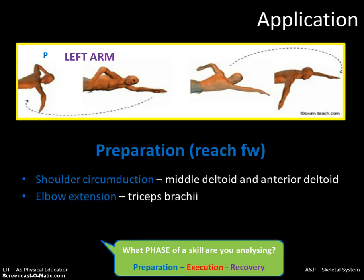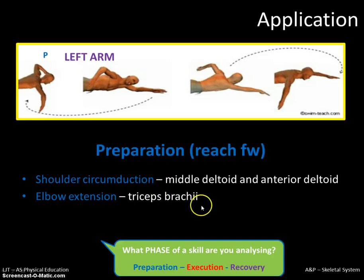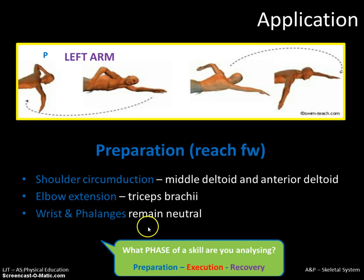Elbow extension is created by the triceps brachii contracting. It's really important that you get comfortable using the word brachii, because if you just say triceps you'll get zero marks in the exam. The wrist and phalanges remain fairly neutral in this part of the action. That was the preparation phase.